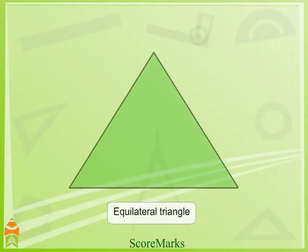Equilateral triangle: a triangle having all sides equal, that is AB is equal to BC is equal to AC, and each angle is 60 degrees.